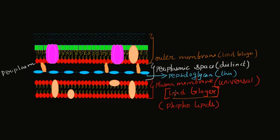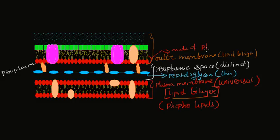However, the outer membrane is different from the plasma membrane. In the plasma membrane, the inner leaflet and the outer leaflet are the same — both phospholipids. But in the outer membrane, only the inner leaflet is made up of phospholipids, while the outer leaflet is made up of something called lipopolysaccharide, or LPS.